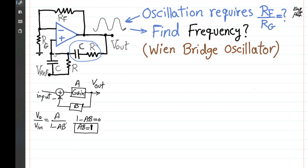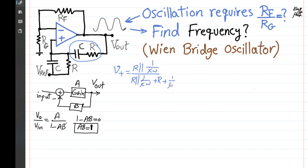From Vout to V-plus, we have a voltage divider: V-plus equals R in parallel with (1 over jCω), divided by that same parallel combination plus the series RC which is R plus (1 over jCω). This is just a voltage division — times Vout — so we are going from Vout to the positive input terminal of the op-amp.